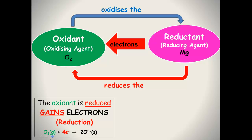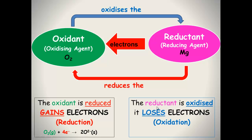Let's look at the example again. Oxygen is the oxidant, but it's being reduced — it's accepting or gaining electrons, so this is a reduction reaction. Reduction is gain. The reductant is oxidized; it loses electrons, and this is an oxidation reaction. Here's your magnesium, which is the reductant — it is causing the reduction of oxygen. Magnesium itself is oxidized; it's losing electrons.